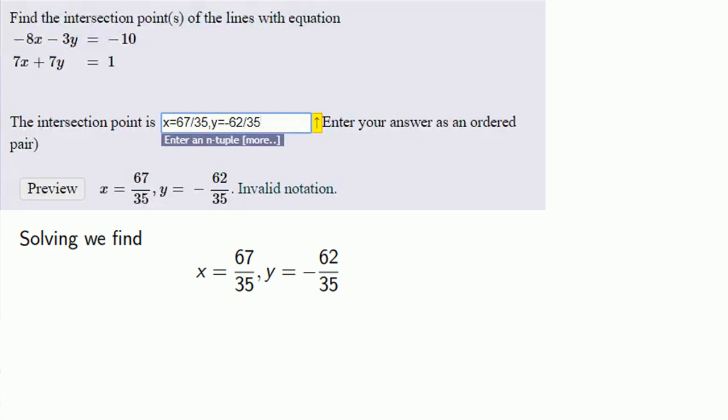Wait for it... And it still doesn't like this notation. That's because an ordered pair should also be enclosed in a set of parentheses. So we have to supply that set of parentheses. Let's check. Our answer is written as an ordered pair with the x-coordinate first and the y-coordinate second. So we'll submit.